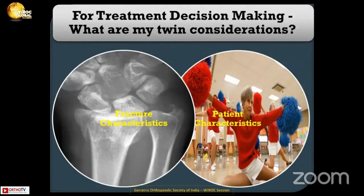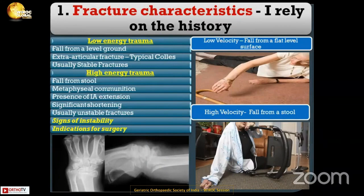For my treatment decisions, what are my twin considerations? What do I look at before going into the decision-making of treatment? One is fracture characteristics, and another is patient characteristics, which are very vital.